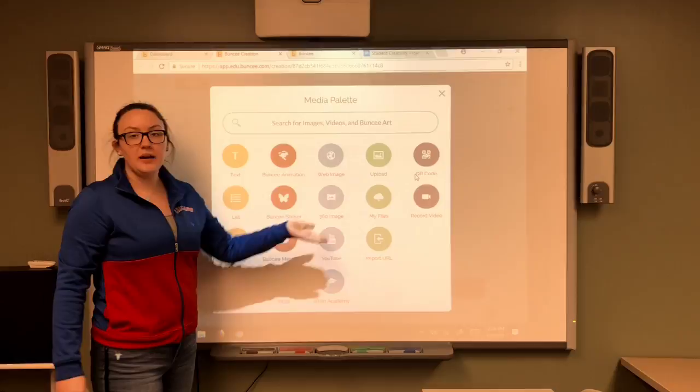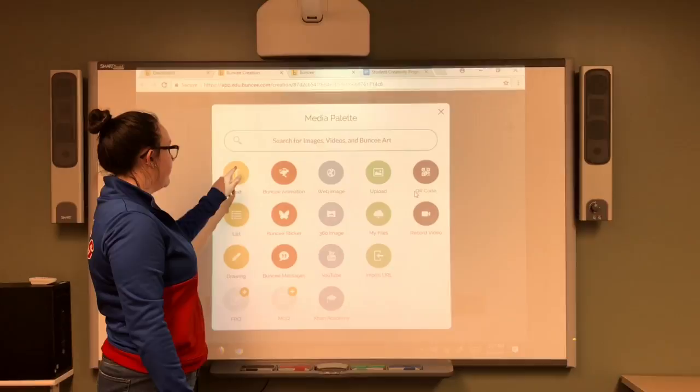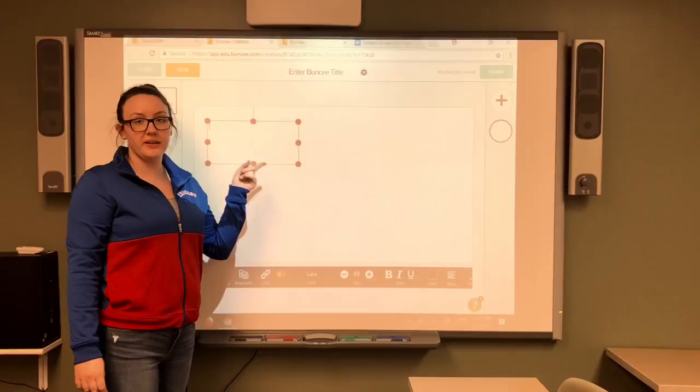Here you have all the options where you can add what you want. Text, images, uploads. For this one, we're going to choose text. And you'll enter in your name and your Buncee title.